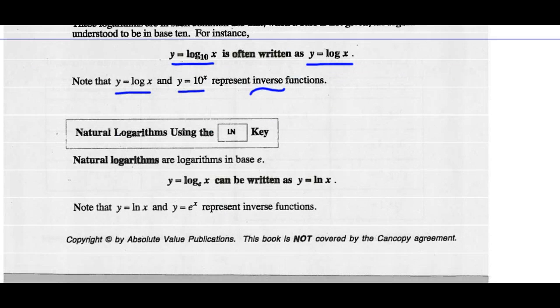Natural logarithms use a natural log key. They have a base of e. So y equals the log of x base e is written as y equals the natural logarithm of x. You can check those out in your calculator.